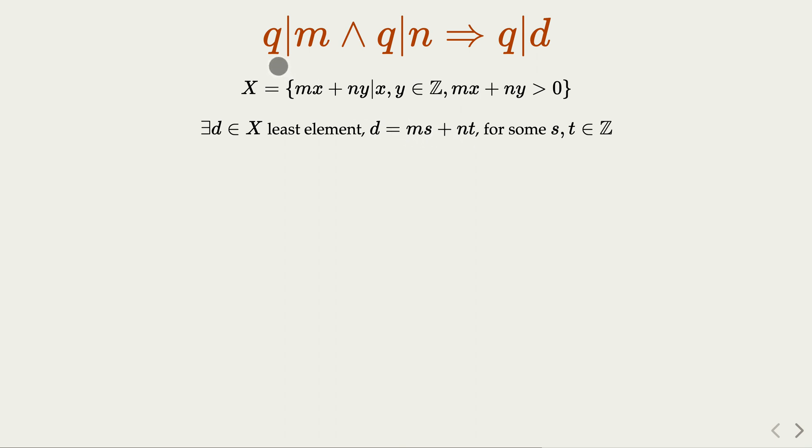So if q divides m, q divides n, q of course divides a linear combination of m and n. So we are done.